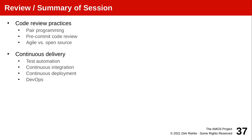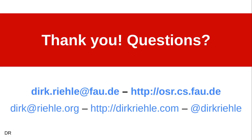In this session we looked at code review practices for improving the quality of commits to the version control system, compared agile methods versus open source — agile is feature-oriented and open source is component-oriented — and then we looked at different escalating stages of automation in the build and testing processes, from simple test automation all the way to continuous deployment and DevOps, which is the high end that companies who want to grow are usually aiming for. Thank you very much for your time and attention, and see you in the next session.